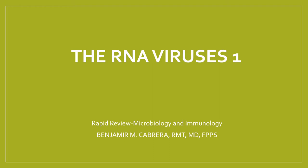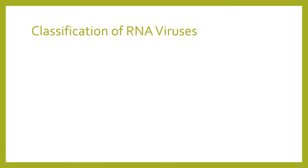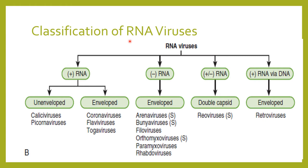Our lesson for today is one of the two lectures regarding RNA viruses. This is RNA Virus 1, which covers the positive RNA, both the encapsulated and unencapsulated groups. There is a table that classifies the RNA viruses into four groups: the positive RNA, the negative RNA, the positive or negative RNA, and the positive RNA via DNA. For today's lesson it would be the positive RNA with the unenveloped and the envelope groups.